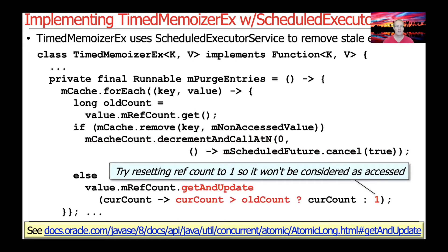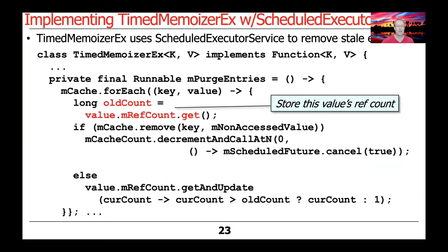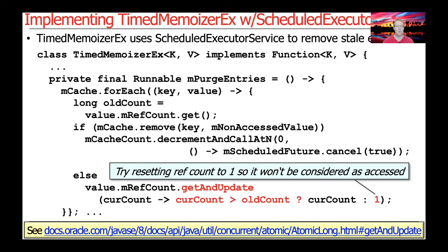However, if we were not able to remove the entry from the map, we call the getAndUpdate method to set the ref count to the appropriate value — either one, if nothing changed between the earlier get call and now, or the current ref count if there was an update, giving it credit for having been accessed during that time period.